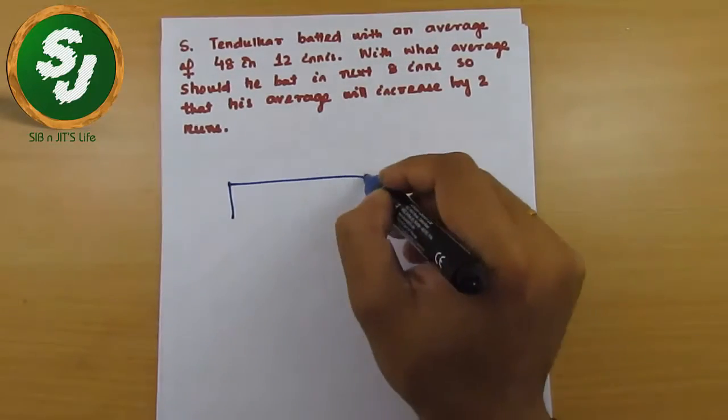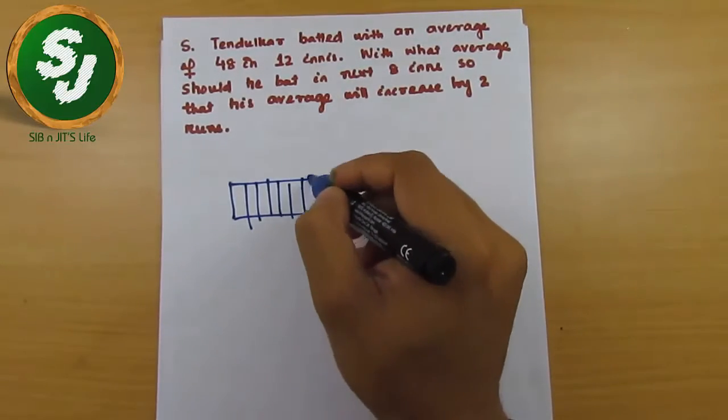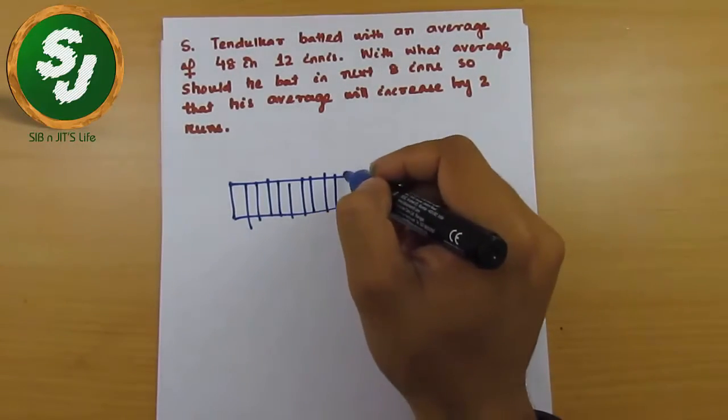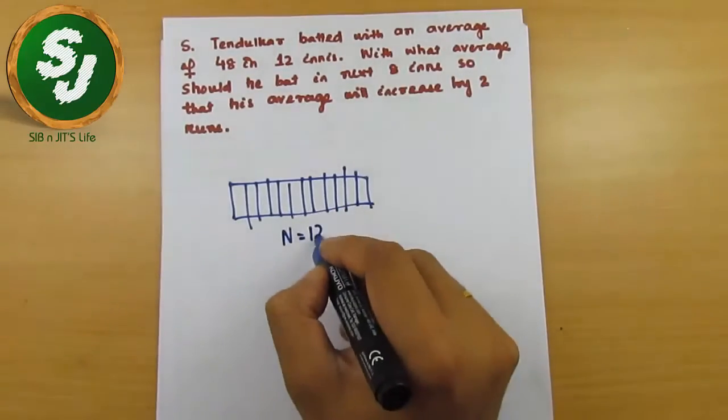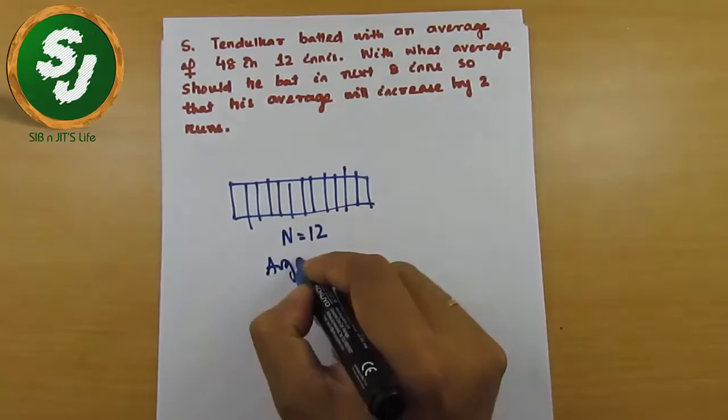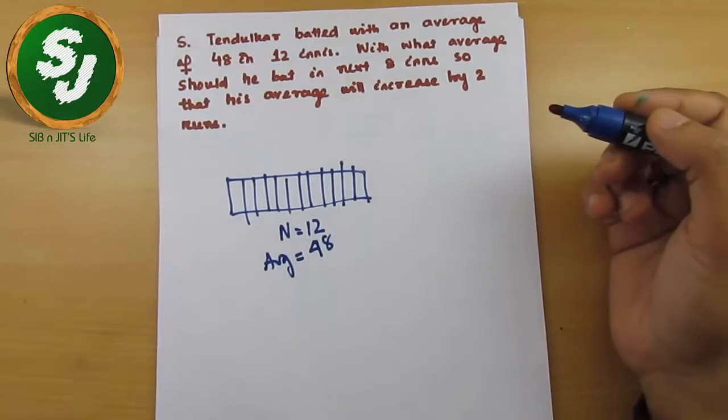What does it mean? He batted in 12 innings: 1, 2, 3, 4, 5, 6, 7, 8, 9, 10, 11, 12. So N equals 12 and average is 48. This is his performance in 12 innings.